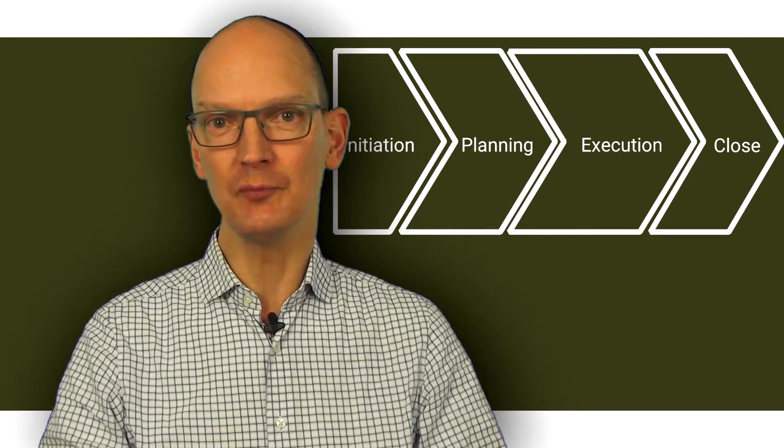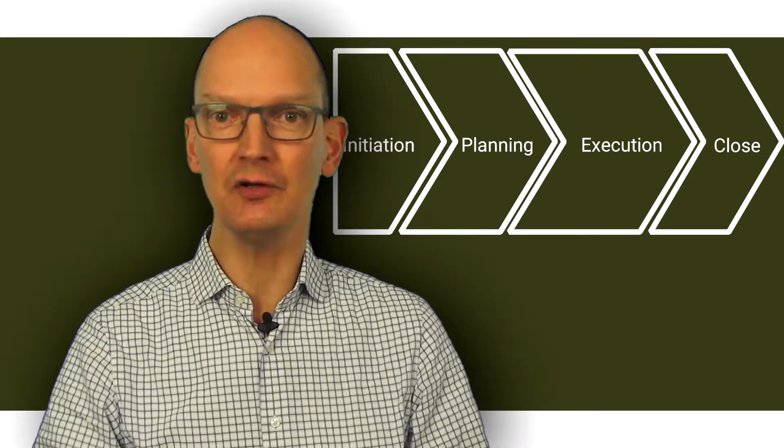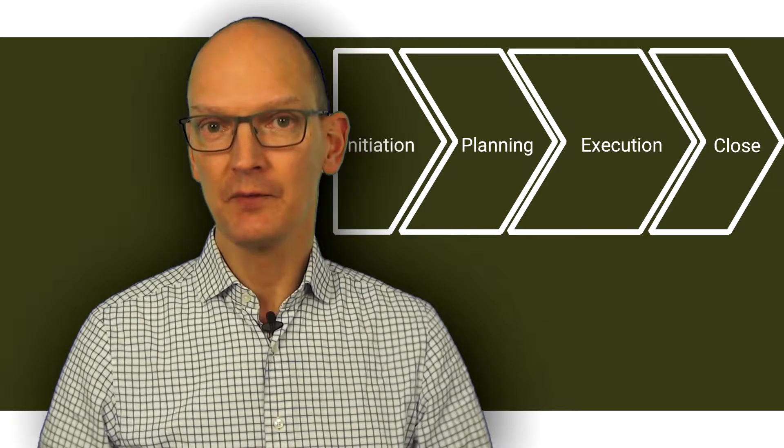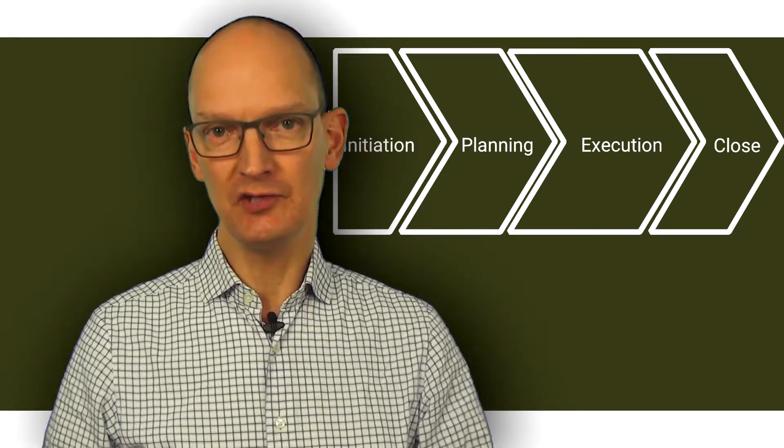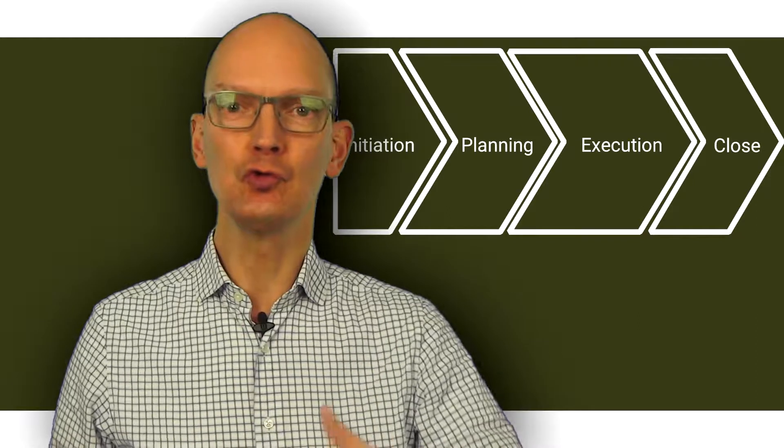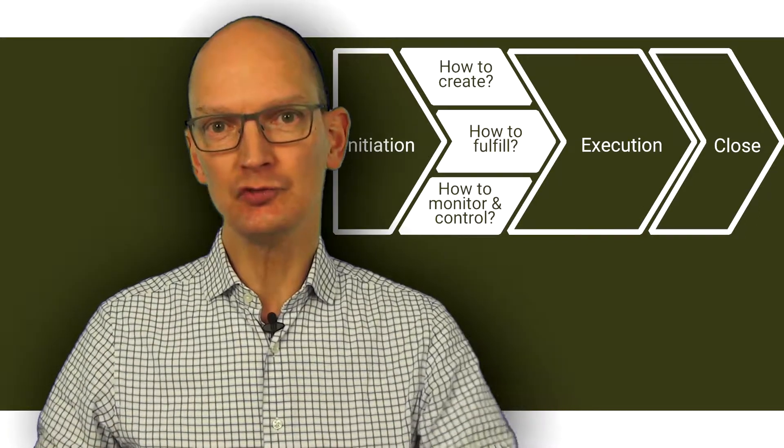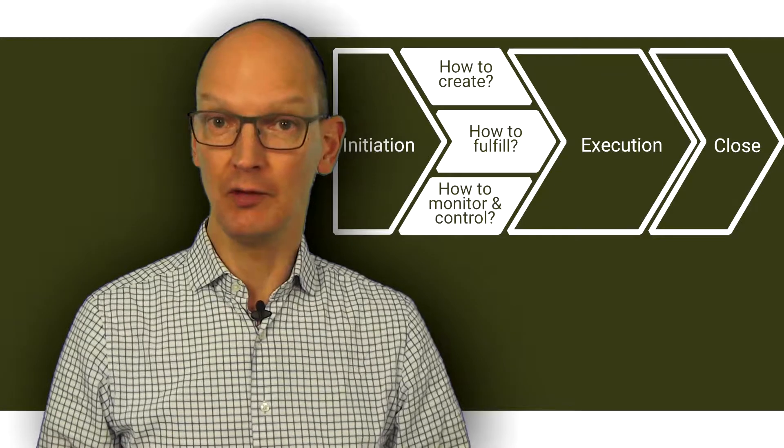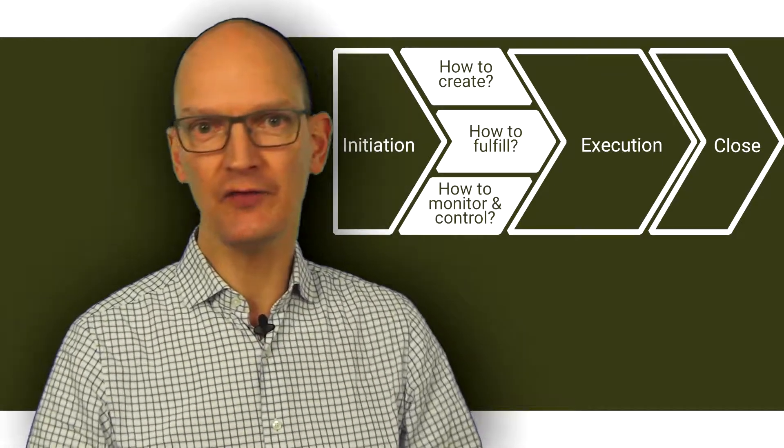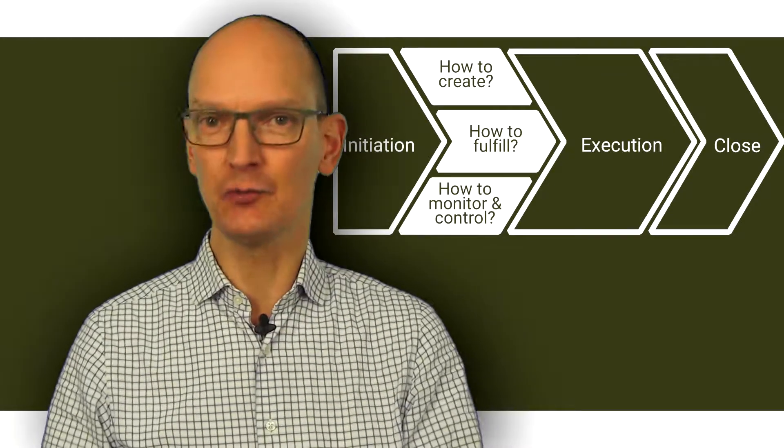Once you have collected all this information about what the project must deliver and what the boundaries are, then start planning. And you have to create three distinct plans. The first plan is how to create the product. And this is what your team will be working on during the execution phase. Or keep it simple. You really don't need to tell them how they should do their job. That is what they know.